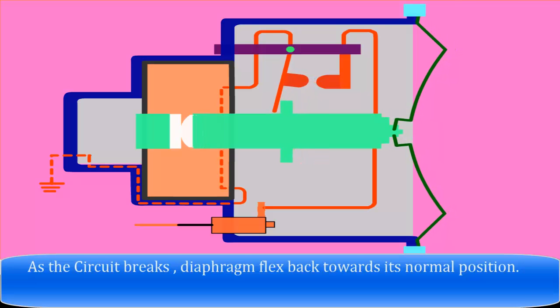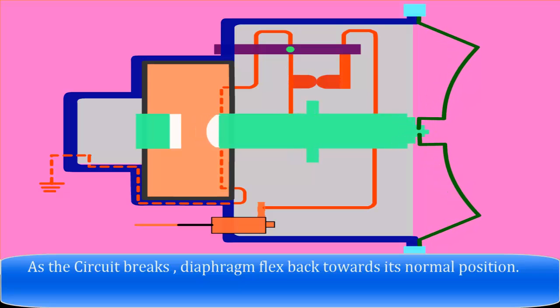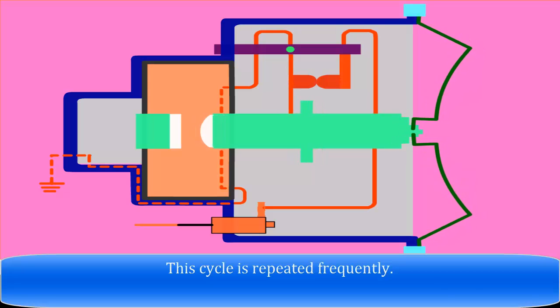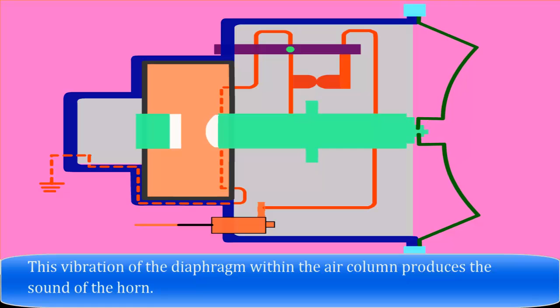As the circuit breaks, the diaphragm flexes back towards its normal position. The cycle is repeated frequently. This vibration of the diaphragm within the air column produces the sound of the horn.